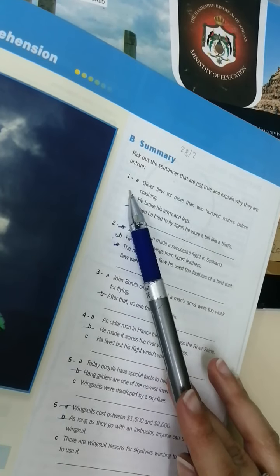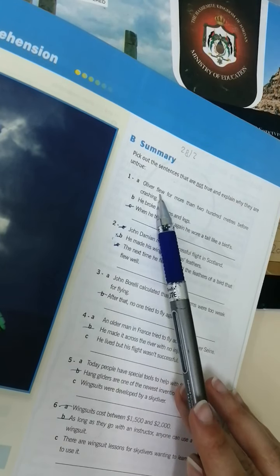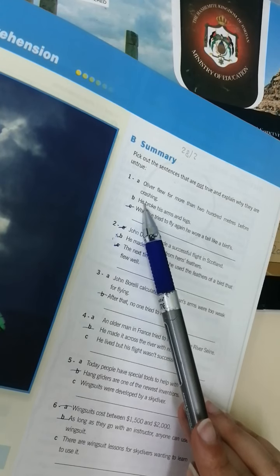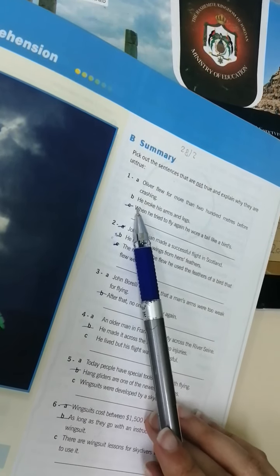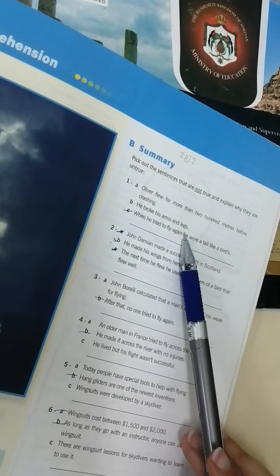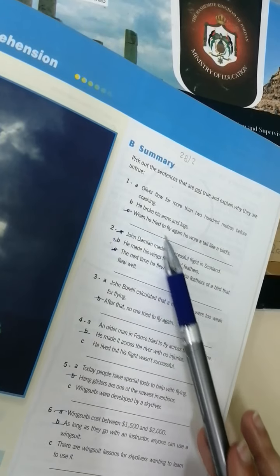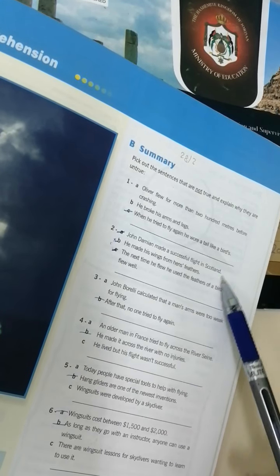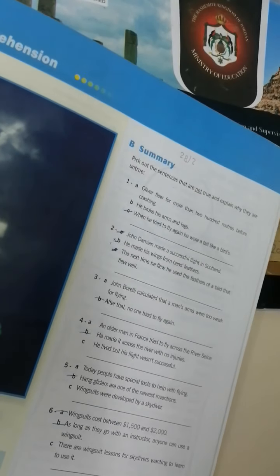Now look at exercise B. Summary. Pick out the sentences that are not true and explain why they are not true. في عندي انا هونة three sentences في منهم واحدة غلط. Oliver flew for more than 200 meters before crushing. Yes. He broke his arms and leg. كسر ايده ورجله. When he tried to fly again he wore a tail like a bird. لما حاول اطير مرة تانية لبس ديل مثل الطيور. No. معناته C هي غلط.